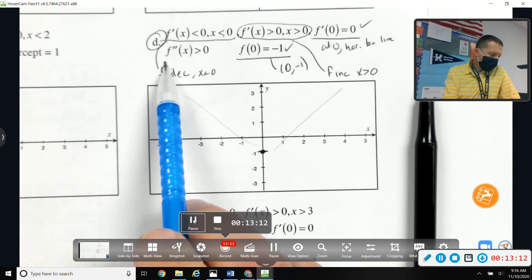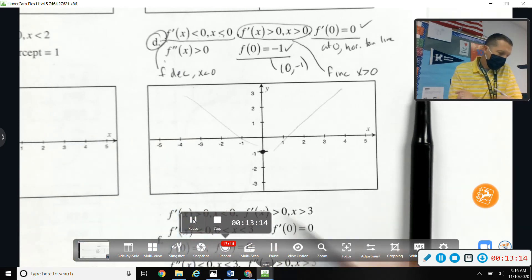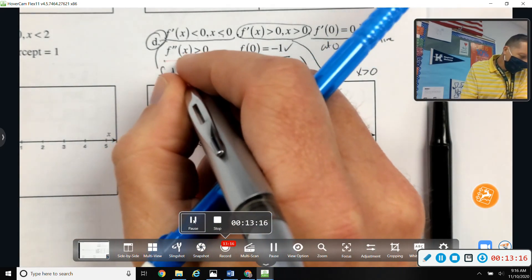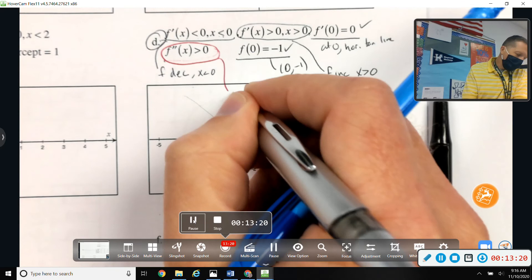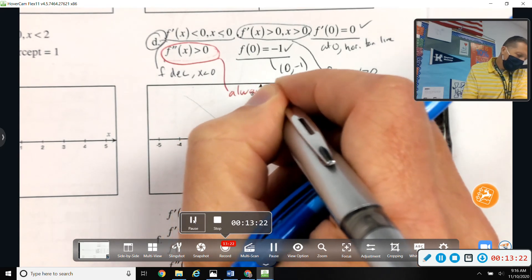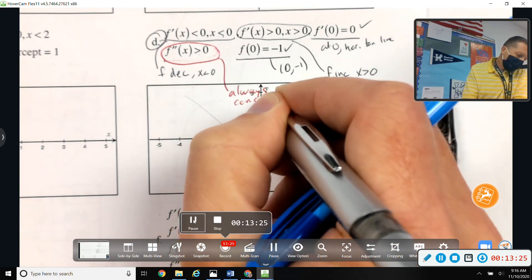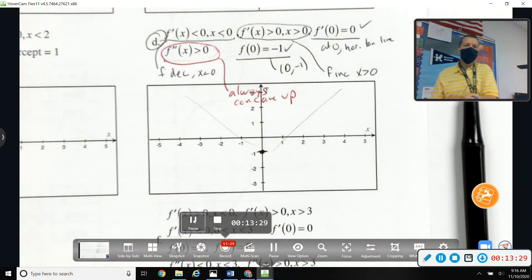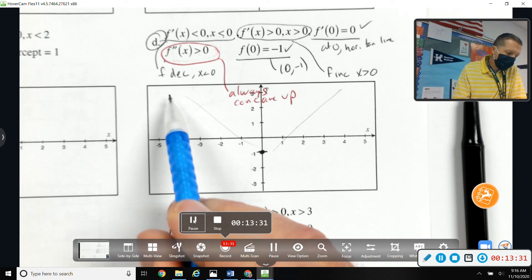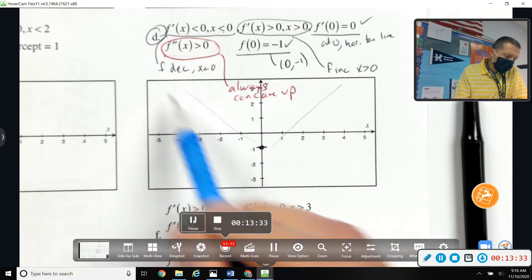The second derivative is greater than 0, and it didn't have a condition on that, so that must mean always greater than 0 - concave up. Okay, so decreasing, increasing, but always concave up.